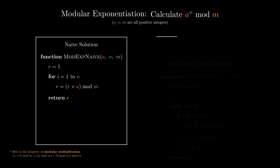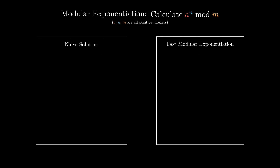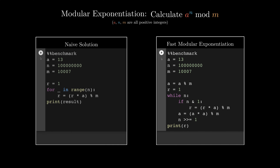Now, let's see how to use the binary exponentiation algorithm to calculate modular exponentiation. With slight modification to the original algorithm, by adding the mod operation in appropriate places, we can successfully transform the binary exponentiation algorithm into the fast modular exponentiation algorithm. Here, we compare the performance of the naive algorithm and the fast modular exponentiation algorithm.